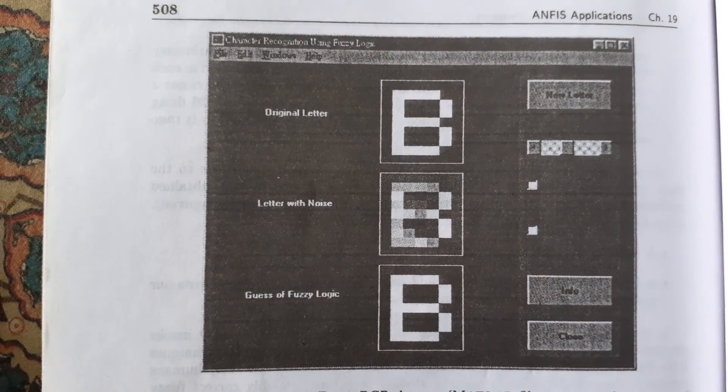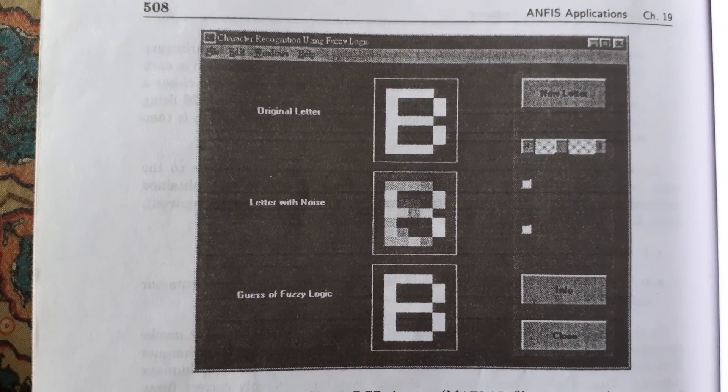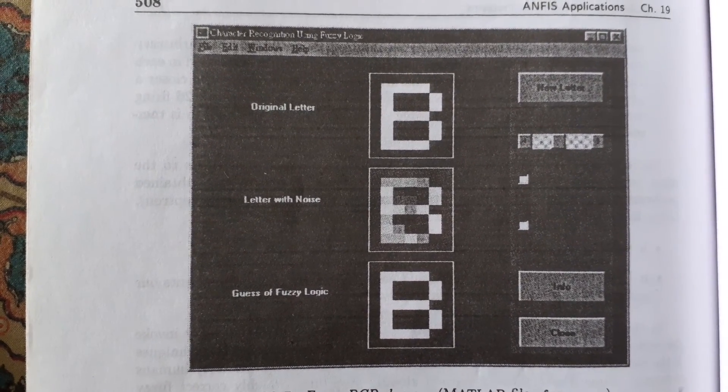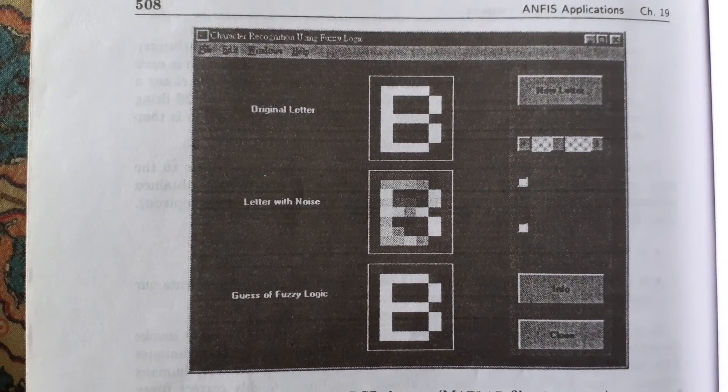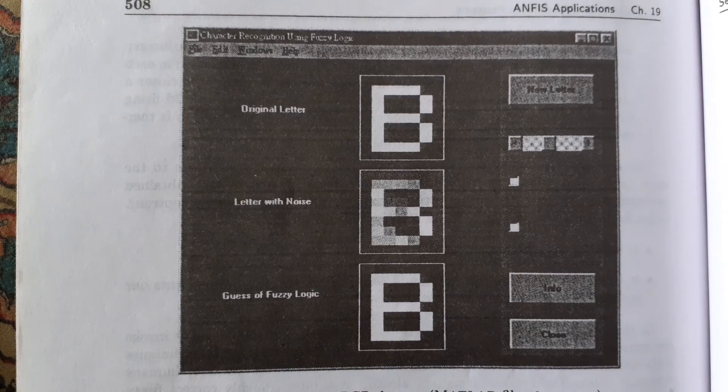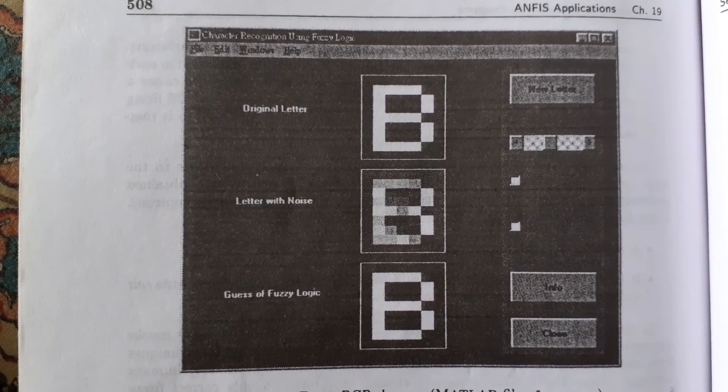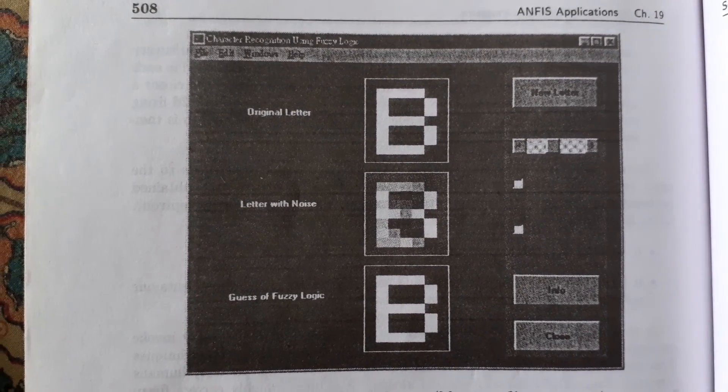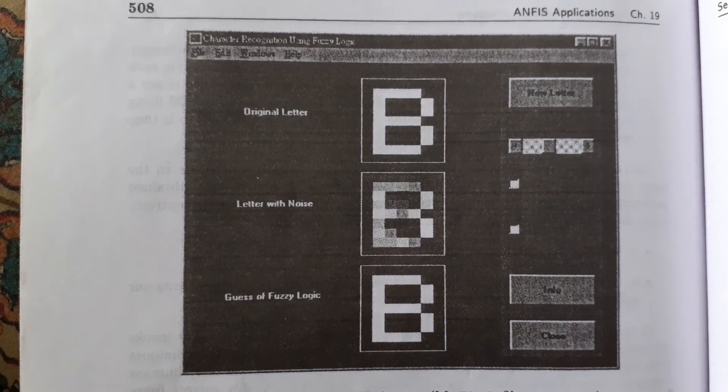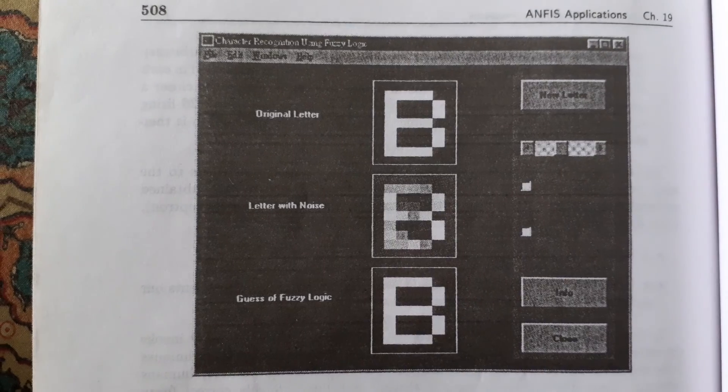Since the described method already gives us a roughly correct fuzzy inference system, the training time required to fine-tune membership functions is likely to be much shorter than that for a multi-layer perceptron starting with random weights.